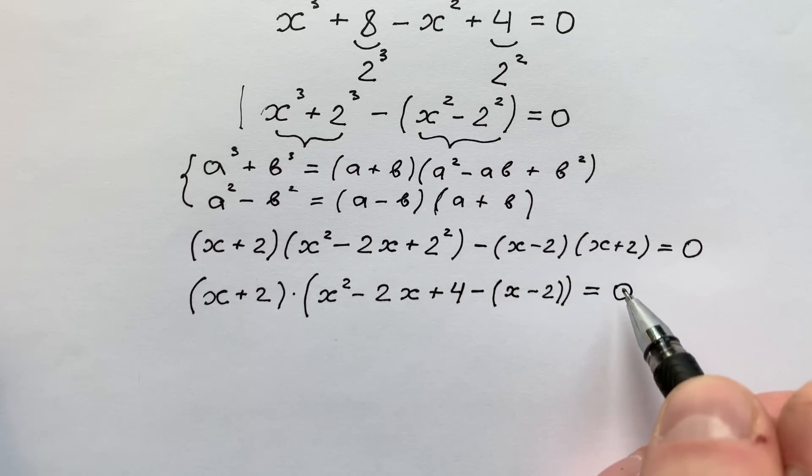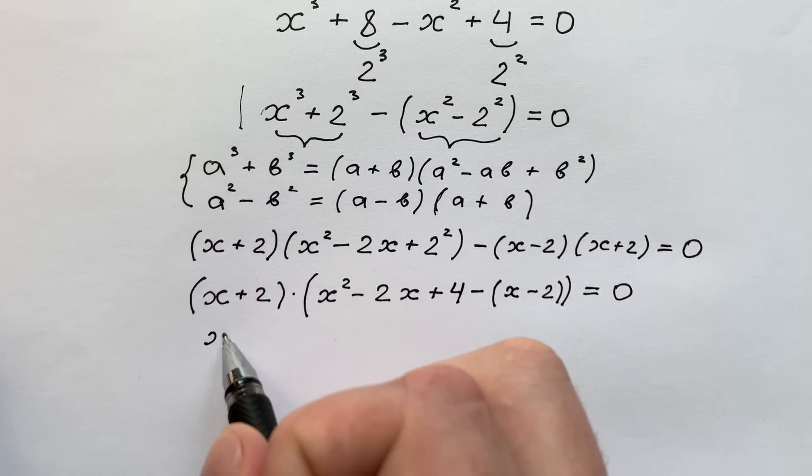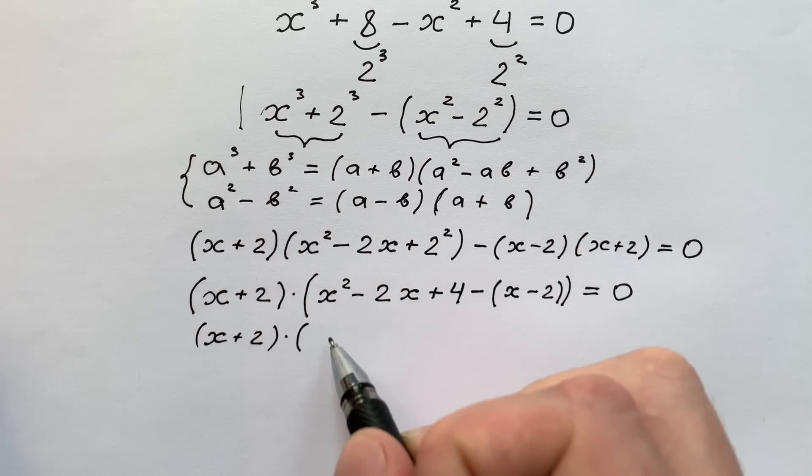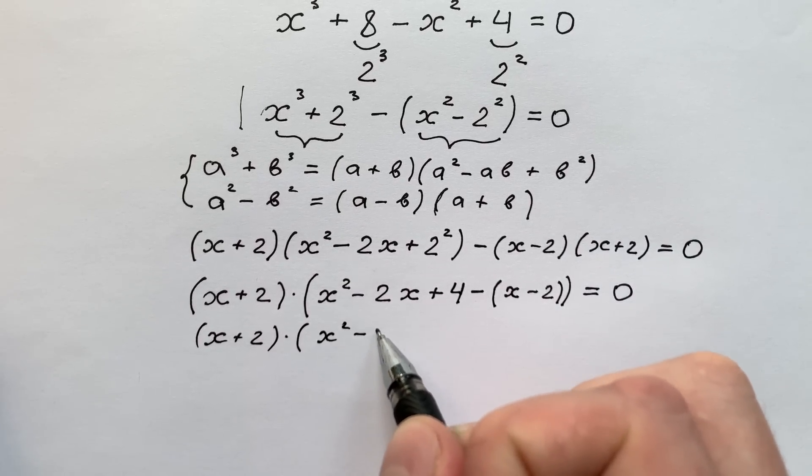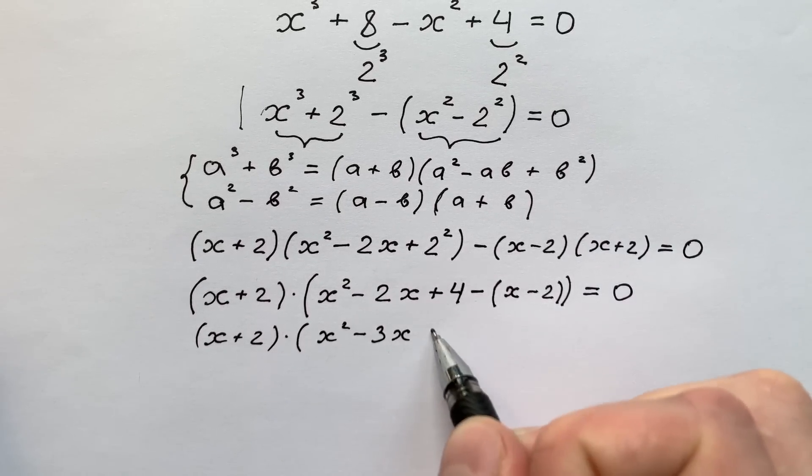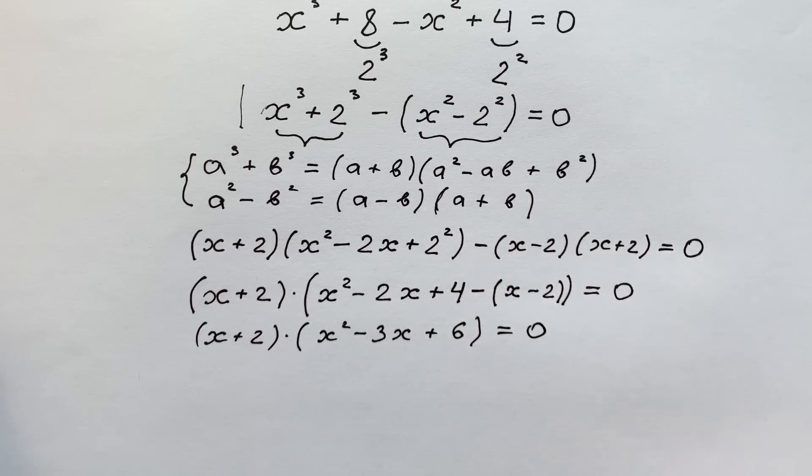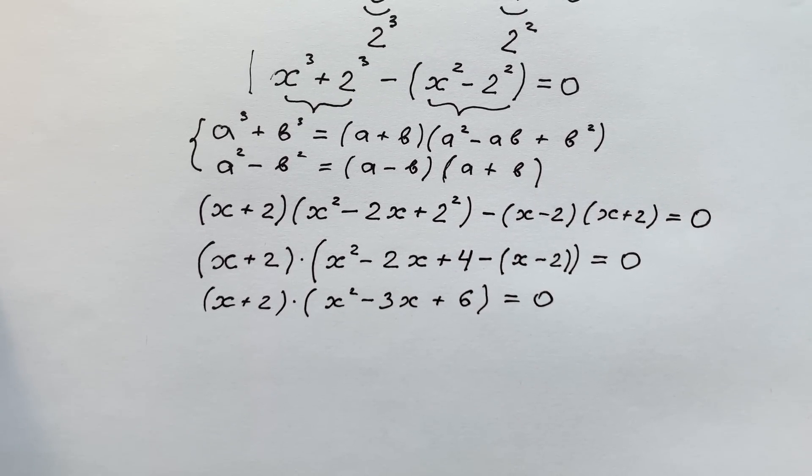Or we can write it like x plus 2 times x squared minus 3 times x plus 6, and it equals to zero. Of course we understand that this equation has solutions in only two cases.